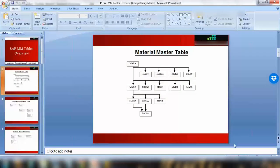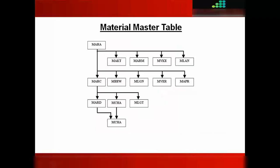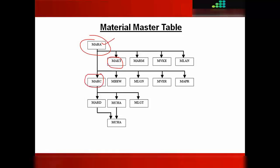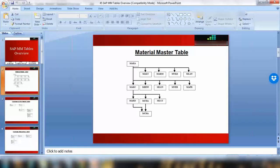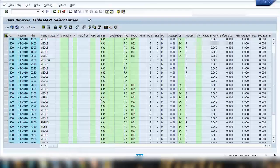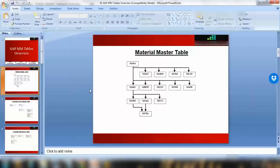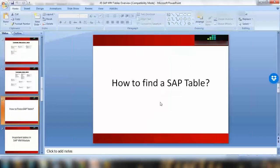Going back to the overview: MAKT is the description table, MARA is the general material master table, and MARC is the plant-specific table. All these tables are linked to each other. If you just remember these three tables for the material master, that's more than enough.